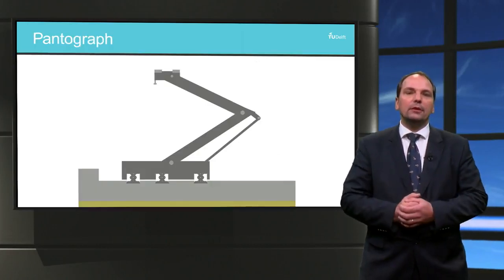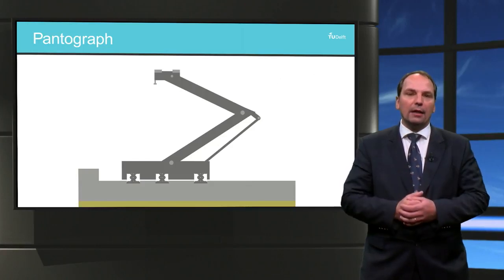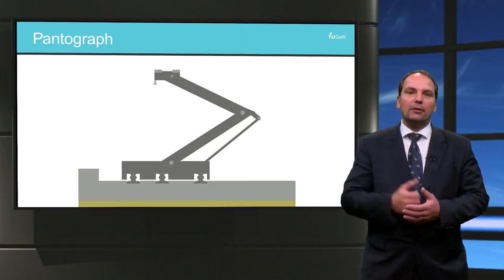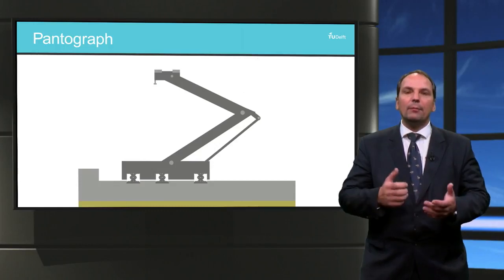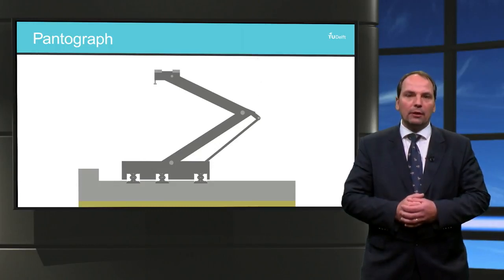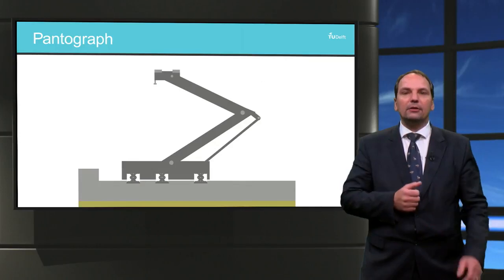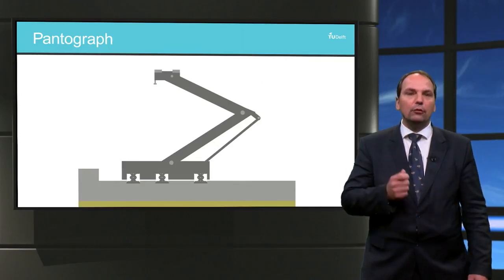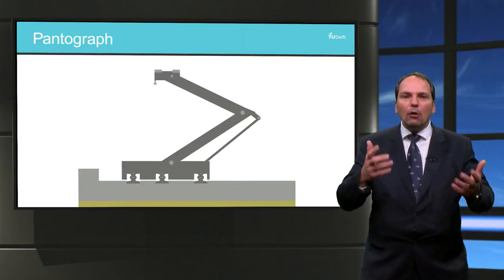The pantograph is the device mounted on top of the train which extracts energy from the catenary system. When the pantograph makes contact with the catenary, it is as if you plug the train into a circuit. But how does this work?